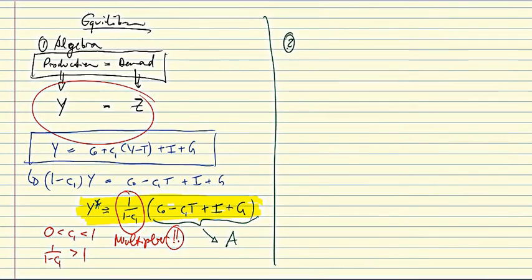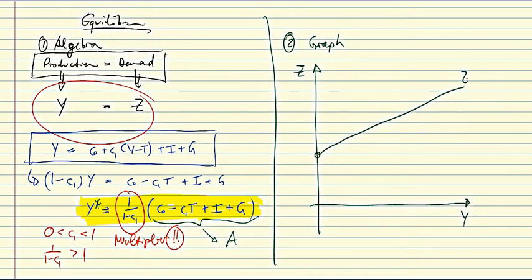Now, how does that look in a graph? How can we show the equilibrium condition in a graph? Well, we have a graph. We have a graph of the aggregate demand function, which looks a bit like this, which has here a slope of c1 and here autonomous expenditures.